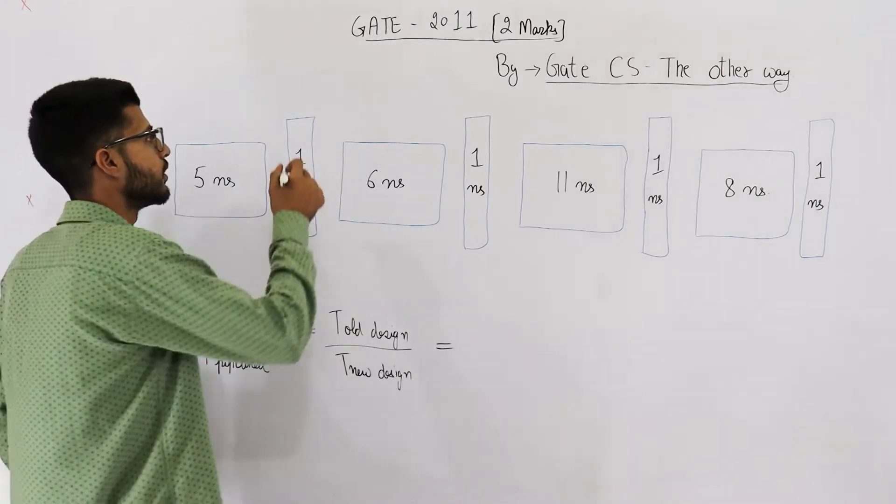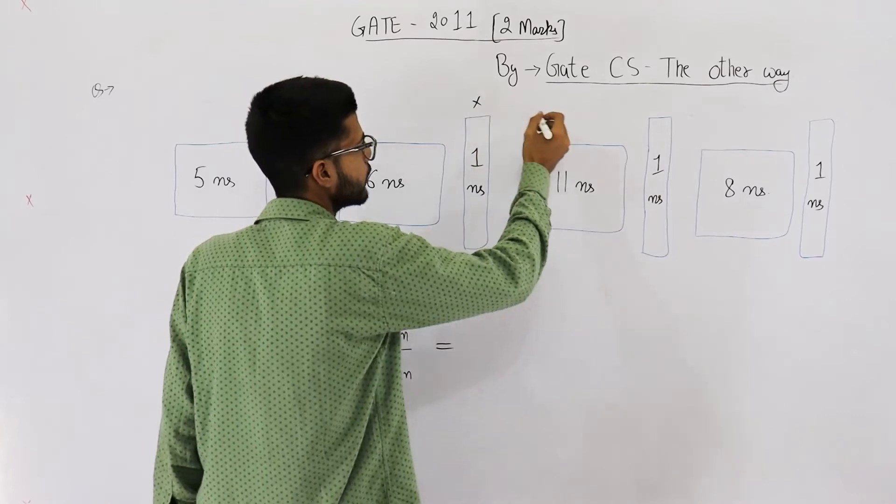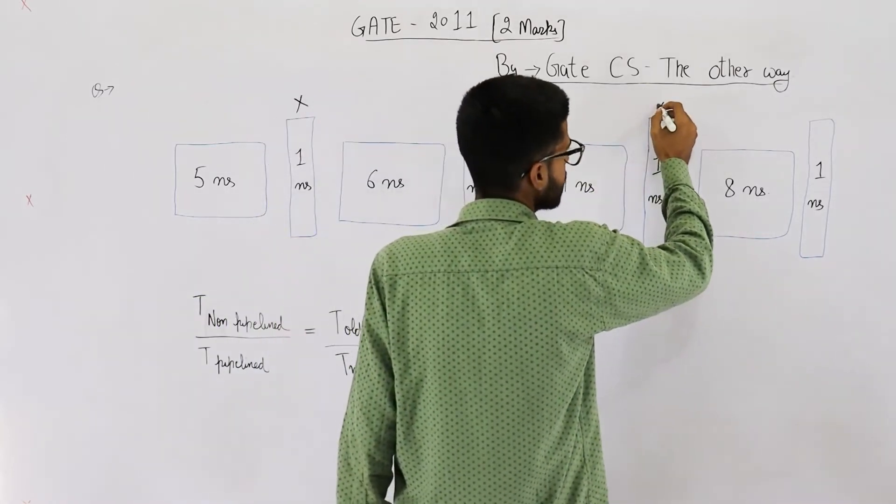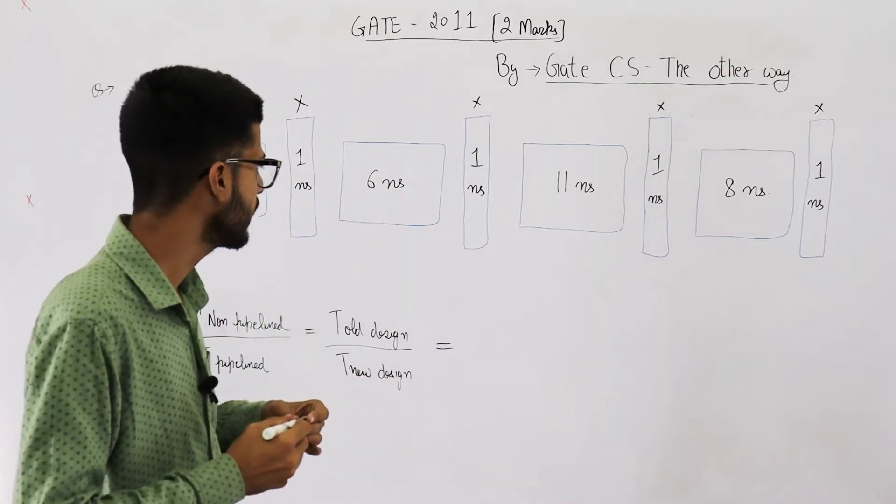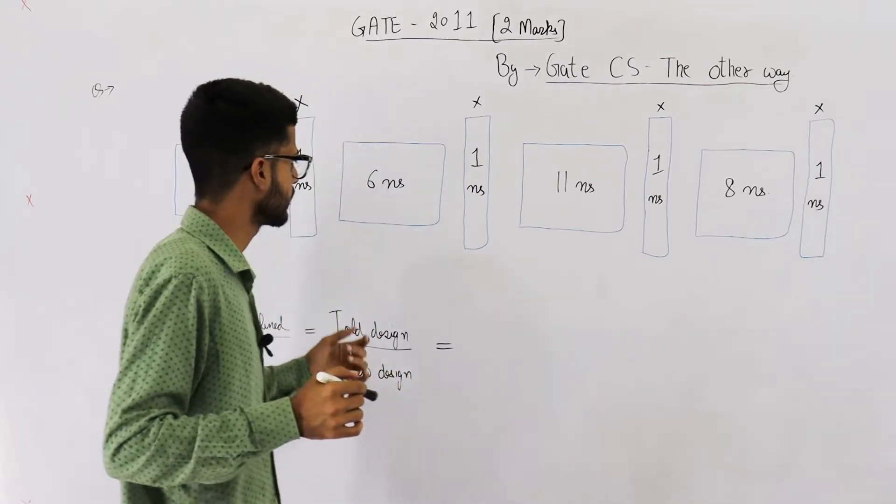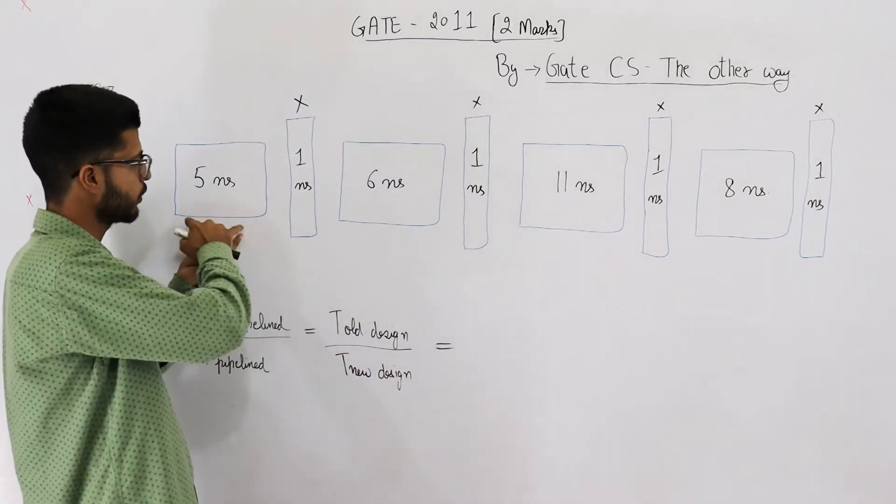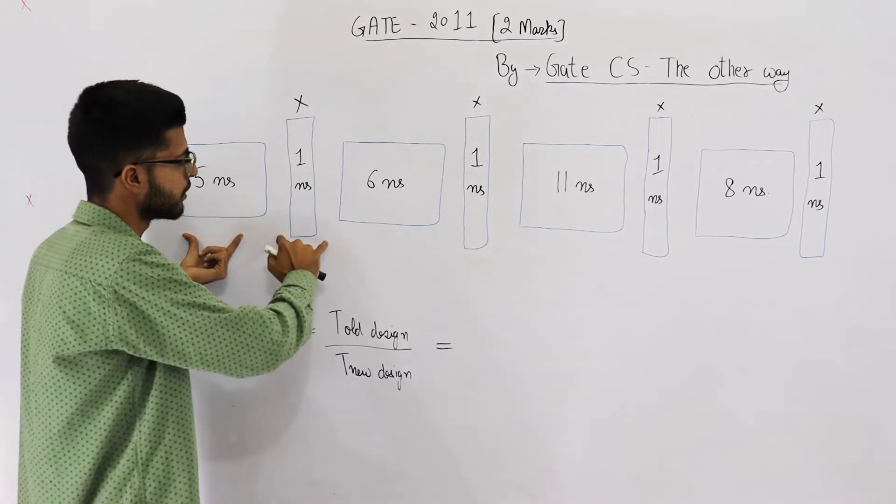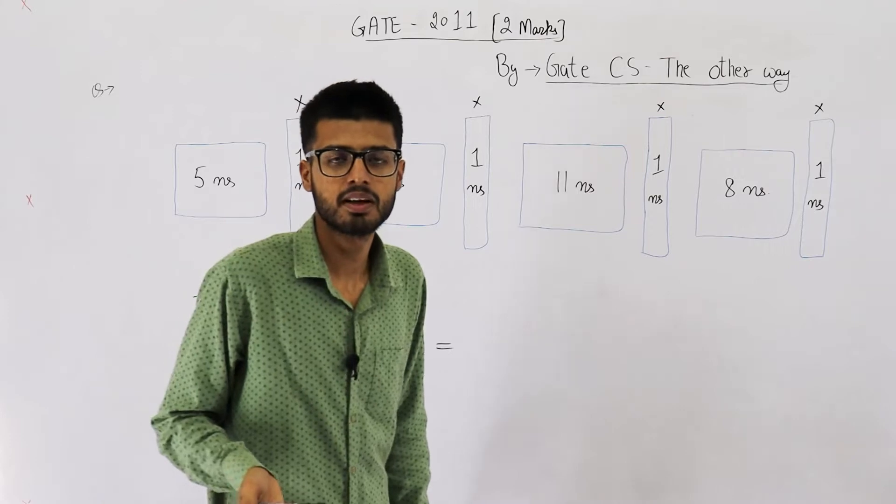First thing is non-pipelined version need not have these buffers. These buffers are only present in a pipelined version. Why? Because stages have uneven delays. So whenever a stage completes earlier than other stages, it will just place the data in the buffer. But nothing such happens in a non-pipelined implementation.